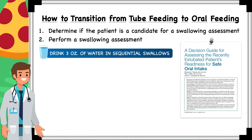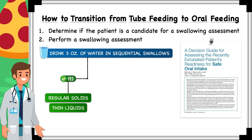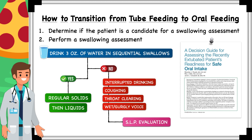With the three-ounce water swallow challenge, patients are given three ounces of water and asked to drink the entire amount in sequential swallows without stopping. If they complete it without issue, they can receive regular solids and thin liquids, or whichever diet texture and liquid consistency aligns best with their preference or dentition. But if there's interrupted drinking, coughing, choking, throat clearing, or a wet or gurgly voice during or after ingesting the water, then a consult for the SLP is warranted. The only time you may not request an SLP evaluation after a failed challenge is if the patient's performance is so poor that they're no longer being considered for diet advancement.